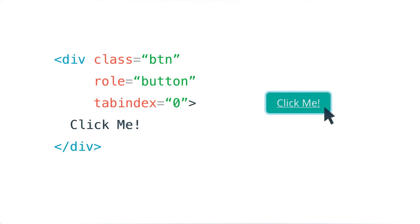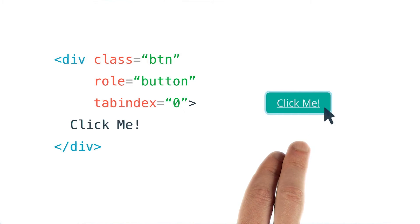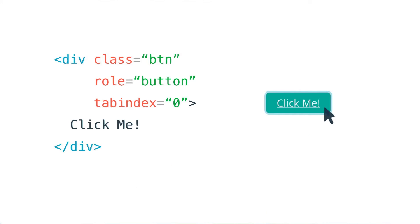So what's going on here? Why does my custom button not work like the native button? Well, for native elements like button, browsers implement special behaviors that let them differentiate between mouse and keyboard focus, and they only display the focus ring for keyboard focus.